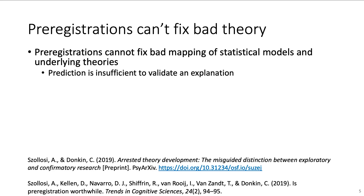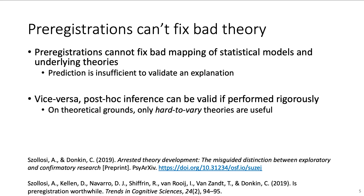While pre-registrations can increase our confidence in the predictive performance of theories, this is insufficient to validate an explanation. Vice versa, post-hoc inference can still be valid if performed rigorously. That is, a theory which was proposed after data collection can be used to derive further predictions which can be tested on the same data. Further, the assessment of the structural integrity of a theory is independent of the data. Following this notion, only hard-to-vary theories are useful — that is, theories which cannot be easily adapted to explain everything. The general line of this argument is that building theories is hard and underappreciated.